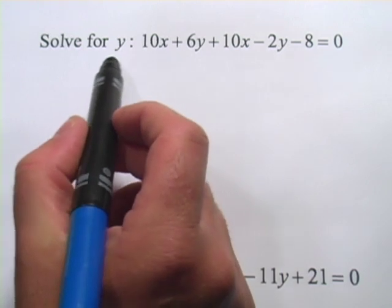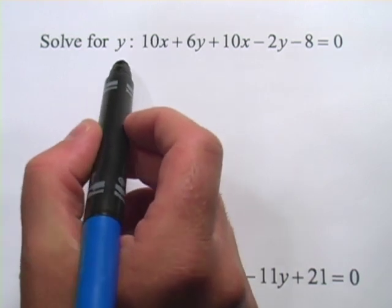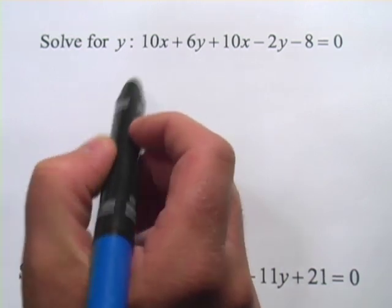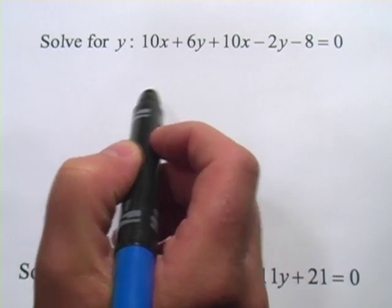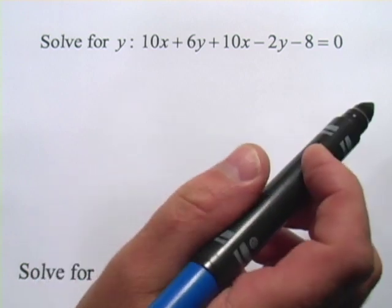This one says solve for y. So what we really want to do is get y all by itself on one side of the equation. And then everything else that's on the other side of the equal sign, that's what y equals.